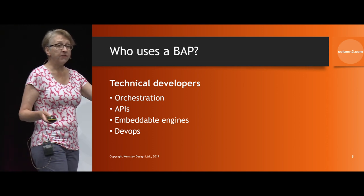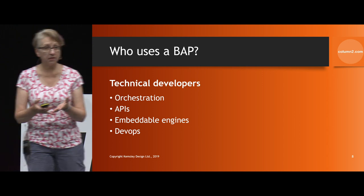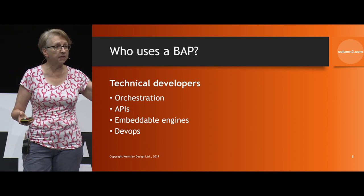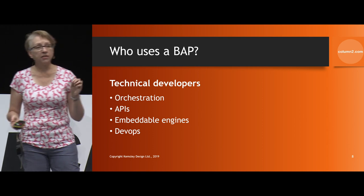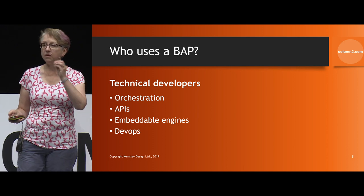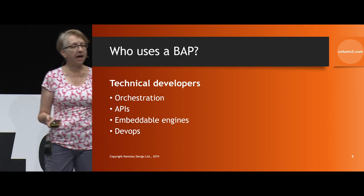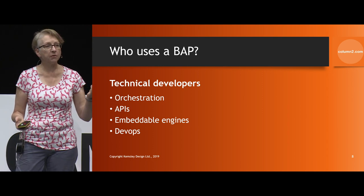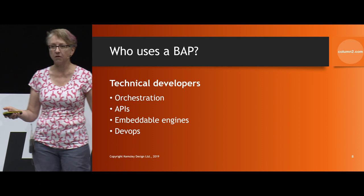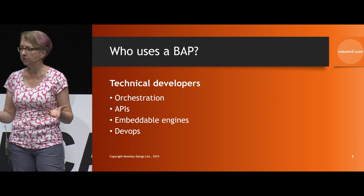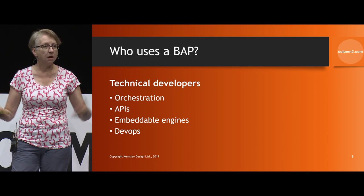Who uses these platforms? Technical developers need all of these process management and orchestration capabilities, an API surface for calling through to other things in their organization, and embeddable engines. Those process engines, machine learning engines, and so on might need to be embeddable within a microservice itself. So technical developers might use the business automation platform to build more microservices that would then be consumed by other users of the platform. The DevOps capability is also important for how they build applications and roll them out inside their environment.